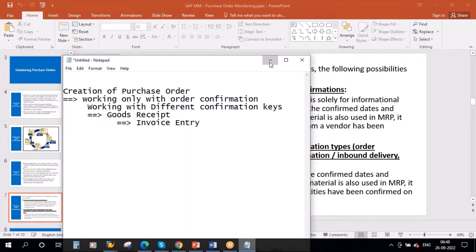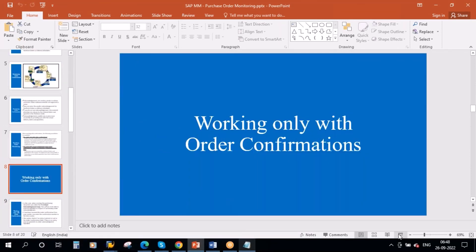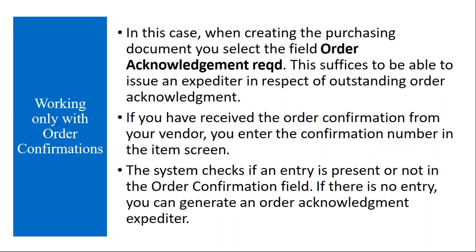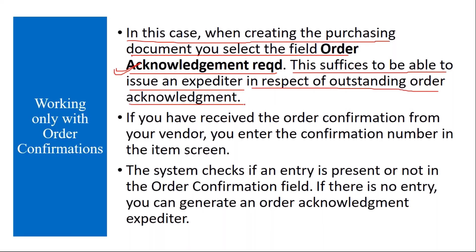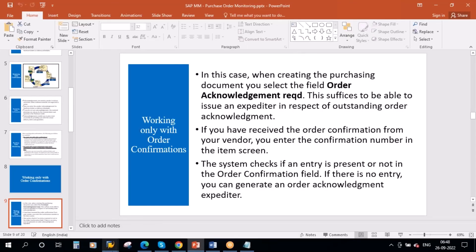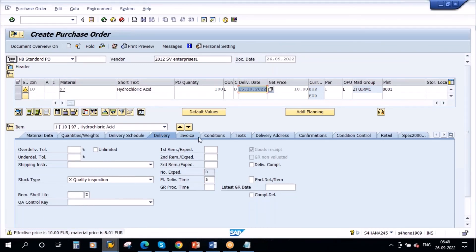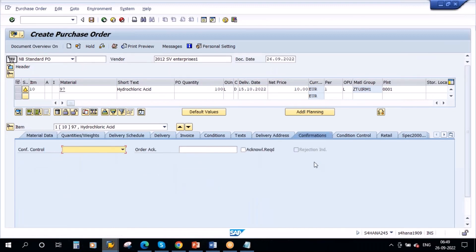Now let's start with working only with order confirmation. When creating the purchasing document, you select the field 'order acknowledgement required' in the PO. This allows you to issue an expediter in case of an outstanding order acknowledgement — you can send a reminder to the vendor. If you are expecting an acknowledgement from the vendor, in the item details there is a tab called 'Confirmation' — go to this tab to see the relevant fields.